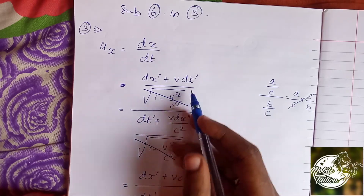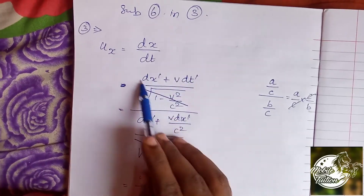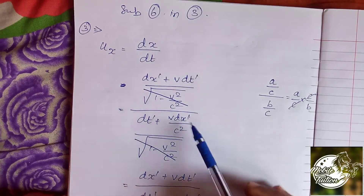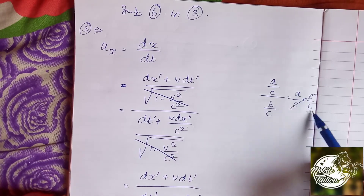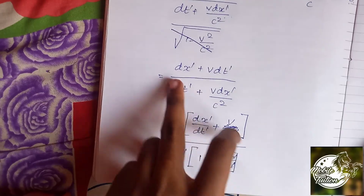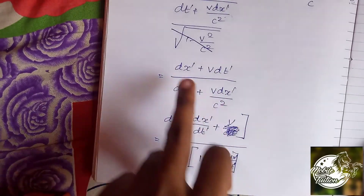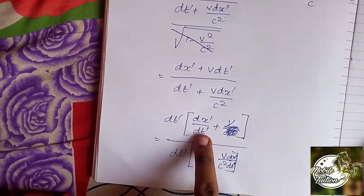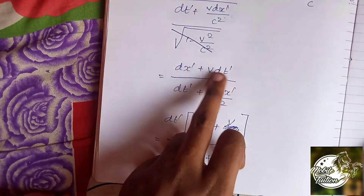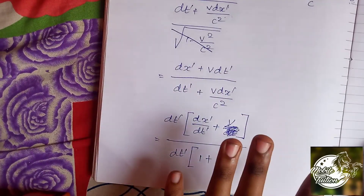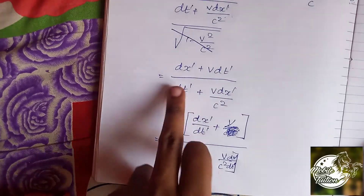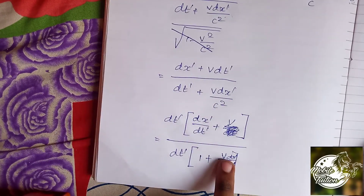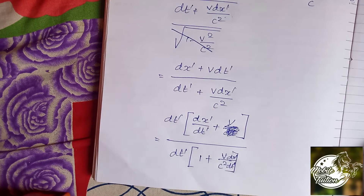cc will cancel out — a by b. Then we turn it to dt. dt will come up. dx prime divided by dt prime we will start. If dt prime divided by dt prime is equal to 1 we will start. dt prime is equal to v by c square into dx prime by dt prime we will start.